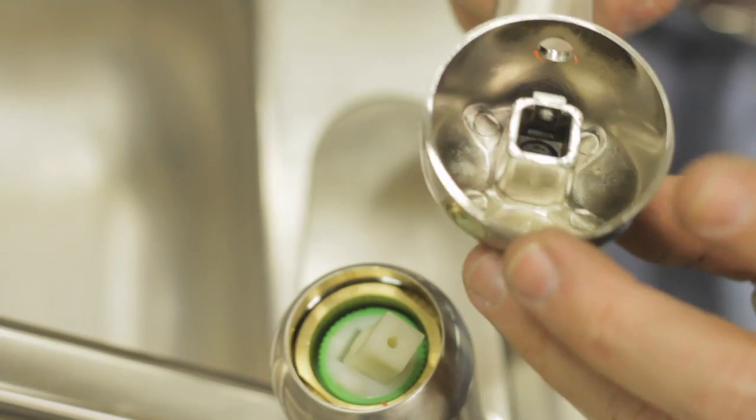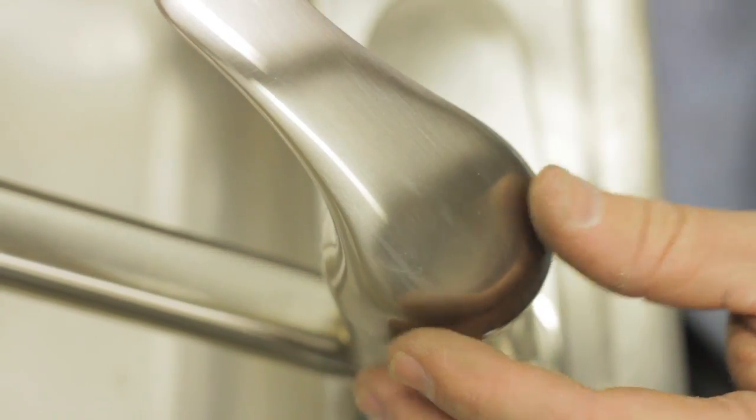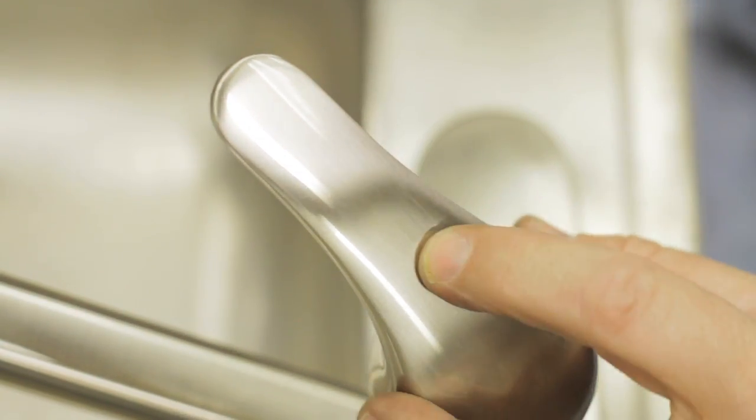Now to reinstall this, once you've got your new one or you've fixed the problem, you reinstall that, tighten up the little set screw, now you've fixed the single handle.